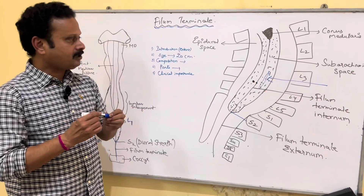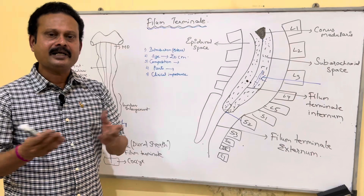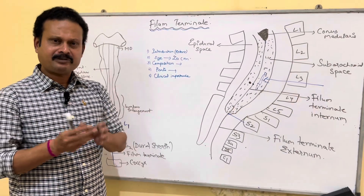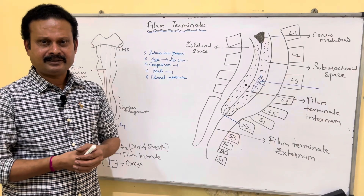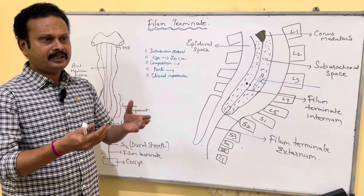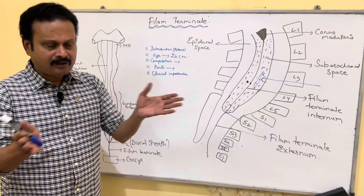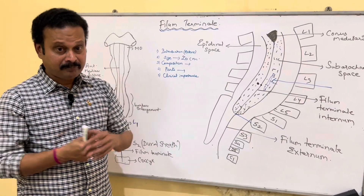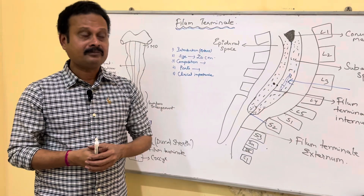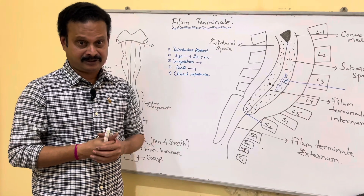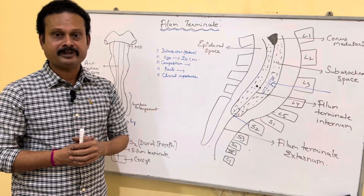The second clinical importance is that normally the filum terminale during development is thin and elastic, but sometimes it becomes thick and fat-laden, wherein the cephalic movement of the spinal cord during development may be impaired and the growth of the vertebral column may be restricted because of this. This is all about filum terminale — thank you.